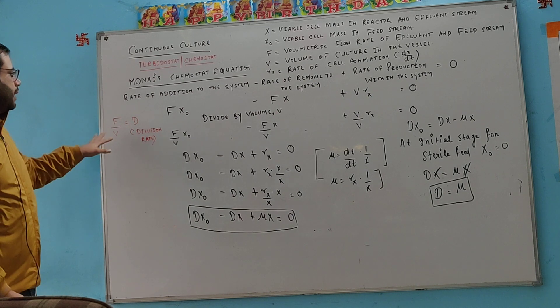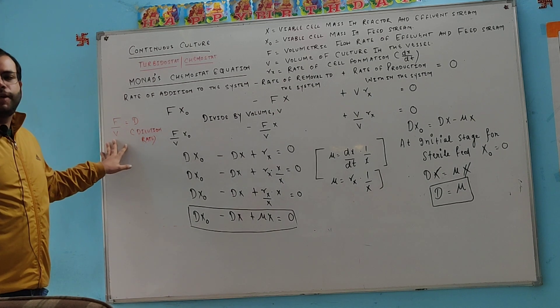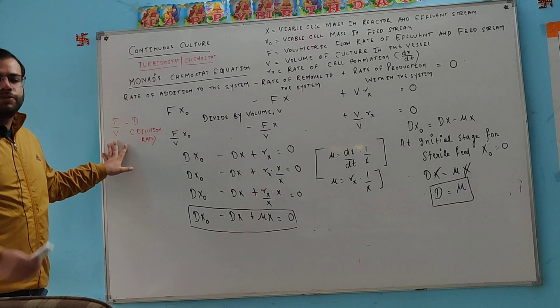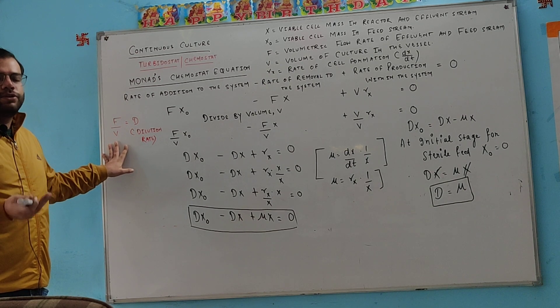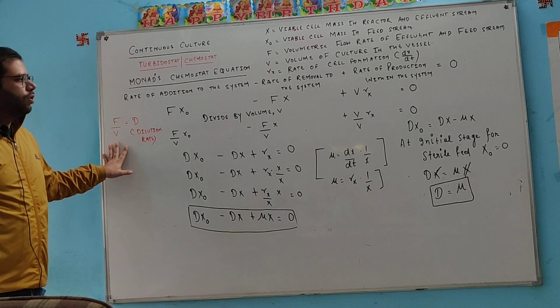The dilution rate is basically your flow rate — whatever you flow into the medium — divided by the volume.